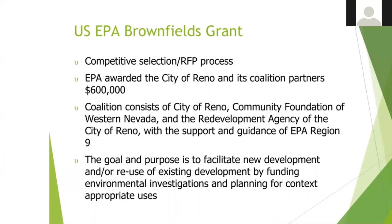The US EPA Brownfields grant is a competitive process. The city of Reno had to write an extensive grant application. Part of that application is to identify the needs of the community, identify certain challenges, and identify how the city and the coalition partners are going to achieve those goals. It's a very competitive process — I'm thinking that out of maybe 100 applicants, probably 20 people are awarded the money. It's a very difficult grant to obtain, but the city of Reno and the coalition partners did a great job.